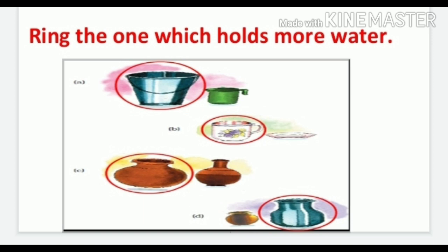Now it is also from your book. Aapko ring karna hai, circle lagana hai us vessel pe jo zyada paani hold karta hai, jis ki capacity zyada hai. First mein kya diya hua hai? Ek bucket aur chhota sa mug, toh kiski capacity zyada hai? Bucket ki. To bucket ko circle kar diya. Second mein ek cup diya hua hai aur ek chhoti si plate — kis mein zyada paani aayega? Ek cup mein. Toh cup ko circle karna hai. C mein ek chhota sa pot diya aur ek bada sa pot — which one holds more water? Bada wala pot, so we will circle it. In question D also, we will circle the pot which has more capacity.